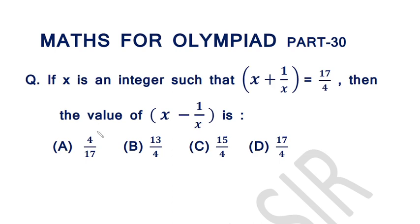Namaskar, this is the 30th video of the series Maths for Olympiad. Today's question is: if x is an integer such that x plus 1 over x equals 17 over 4, then the value of x minus 1 over x is: 4 over 17, 13 over 4, 15 over 4, or 17 over 4.